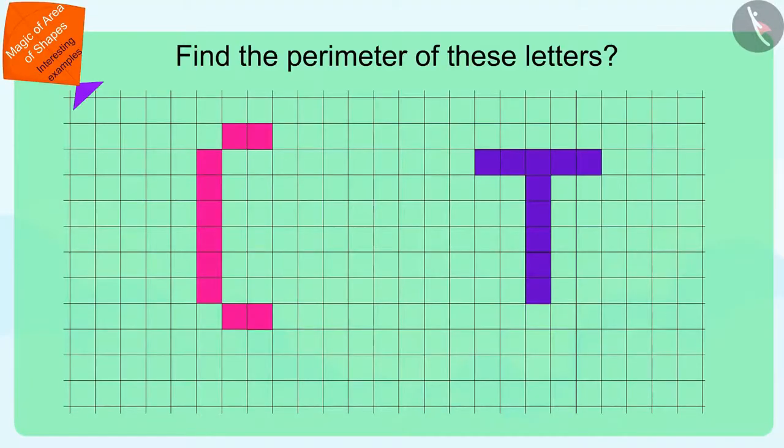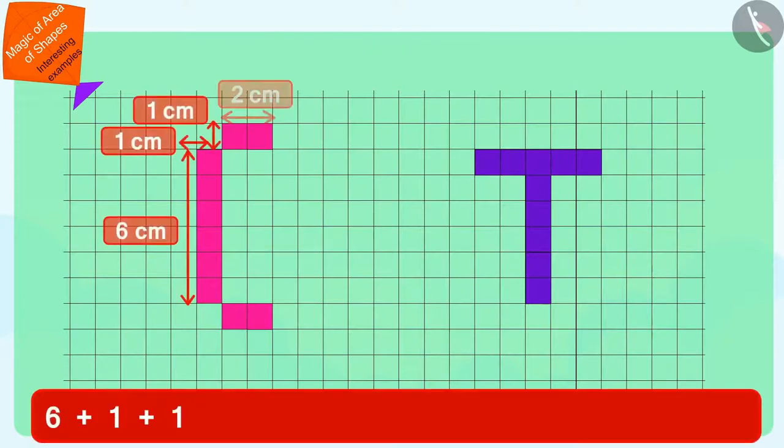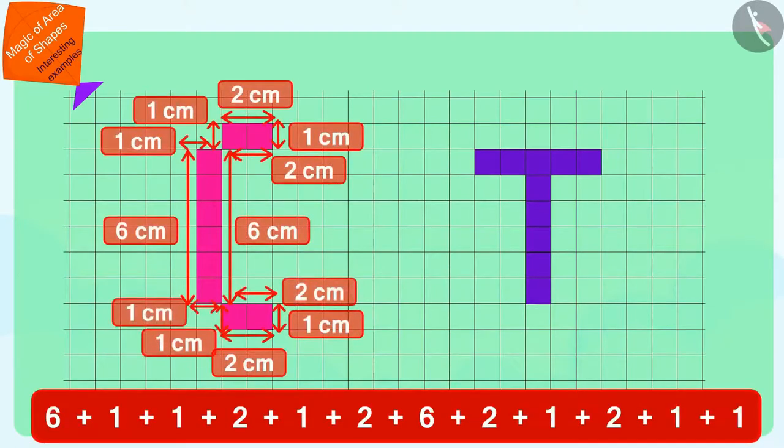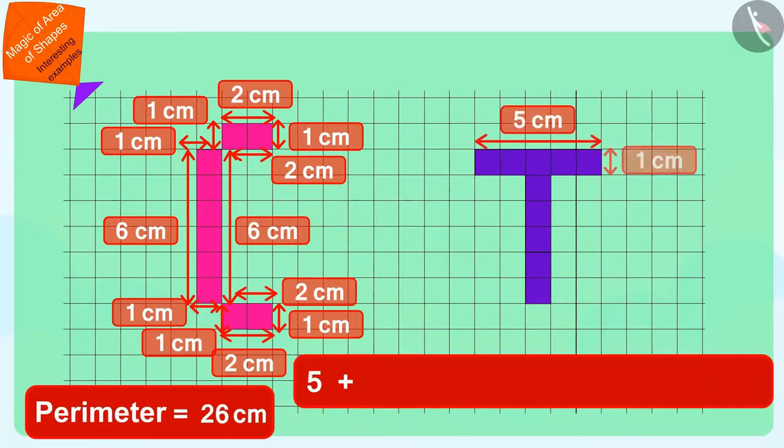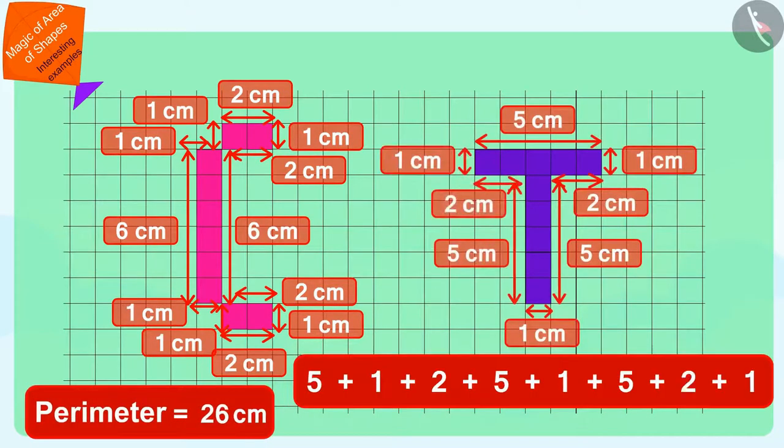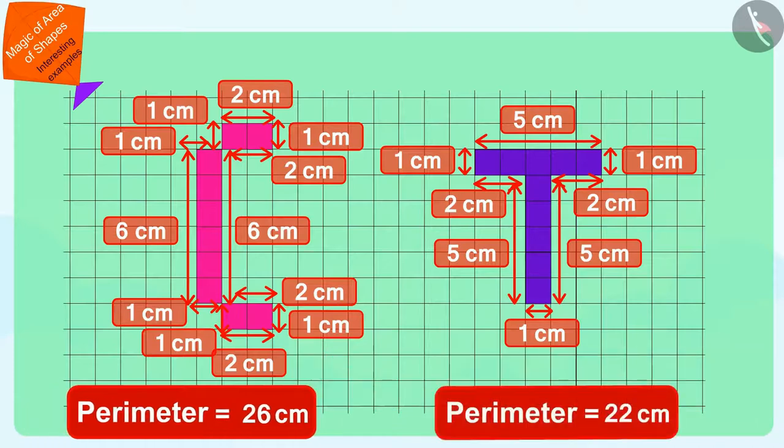Children, can you now find the perimeter of the letters of Chanda and Tufan? Yes! The perimeter of the letter C of Chanda is 26 cm and the perimeter of the letter T of Tufan is 22 cm.